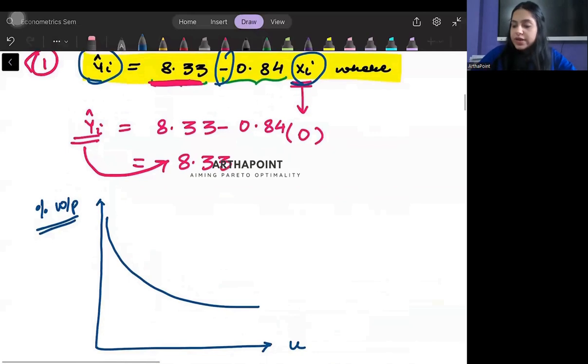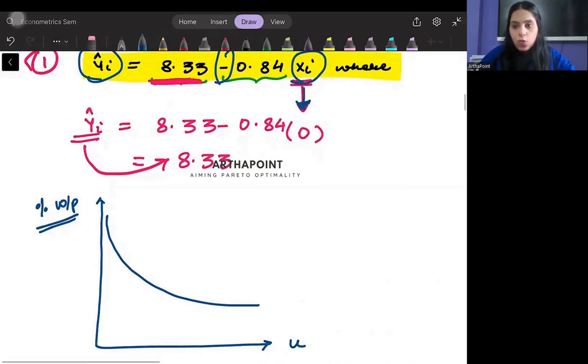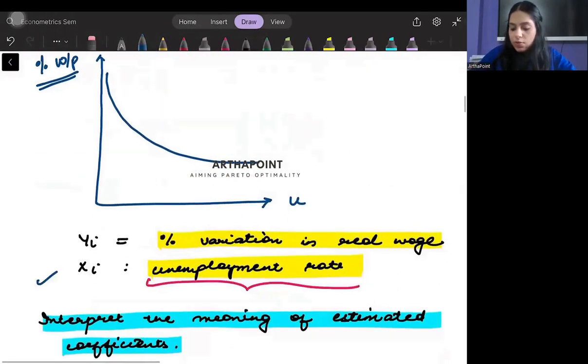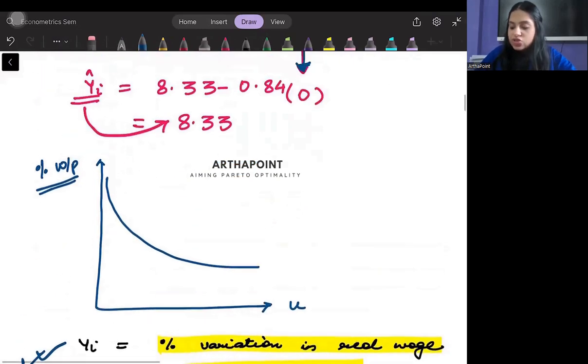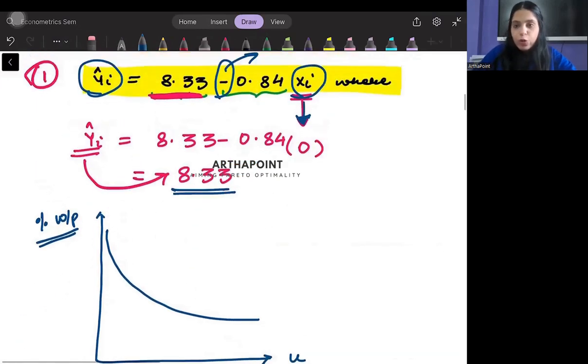And when my unemployment rate is plugged in at 0, when I plug in my unemployment rate at 0, then I get that the percentage variation in real wage is 8.33.